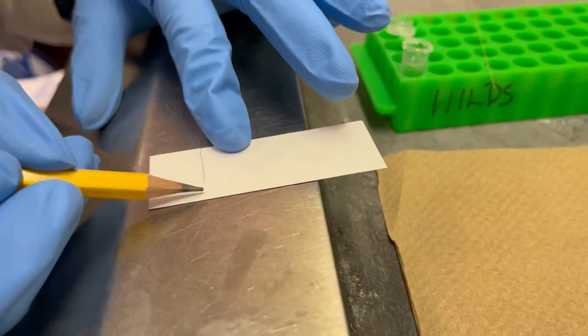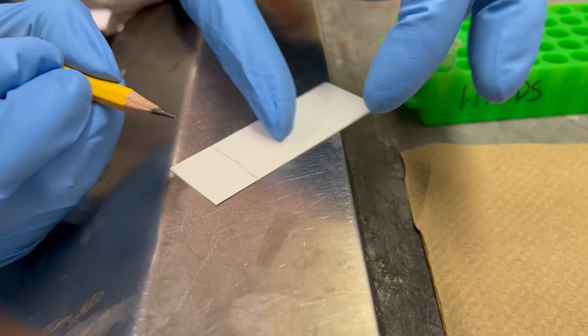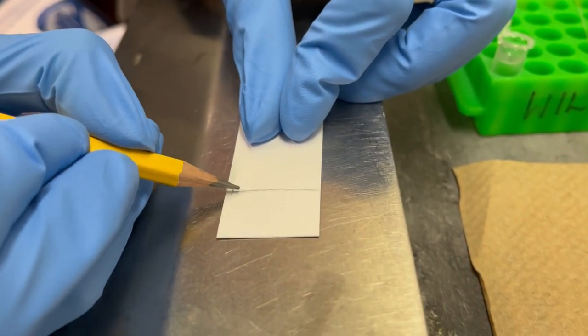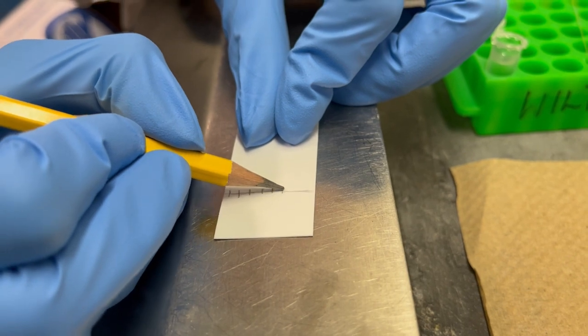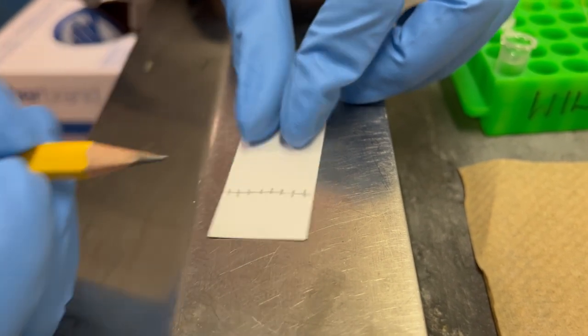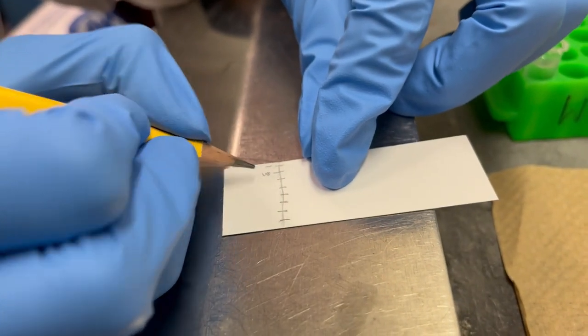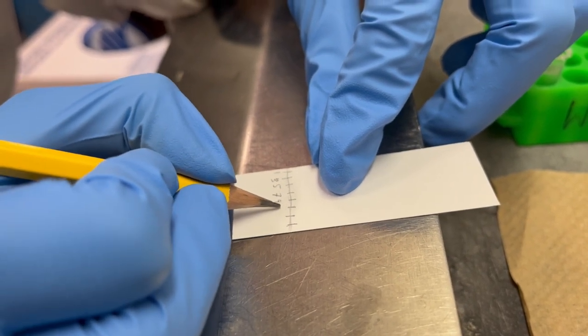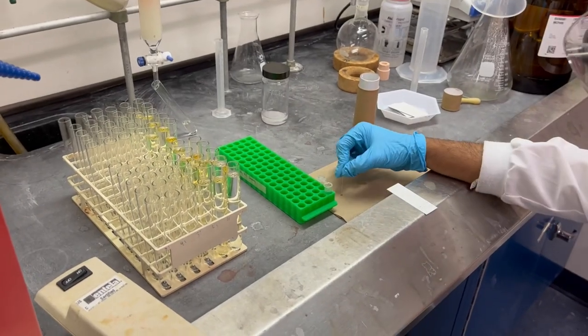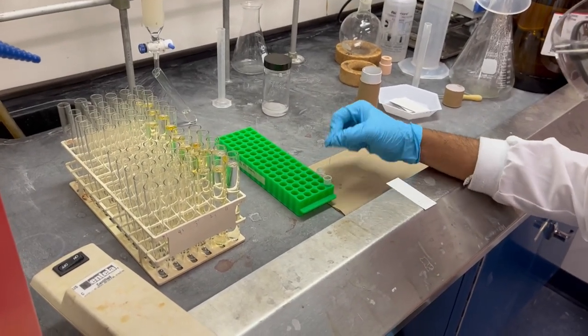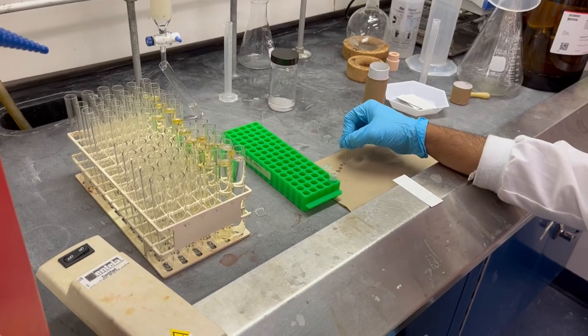Once a UV active spot is observed, silica plates are prepared with the fraction numbers using a pencil. For this column, every second fraction from the first active one were chosen. Fractions are then spotted on the line of the plate. The impure, crude mixture is also spotted along them as a reference point. The same glass spotter is reused but cleaned between each spotting with a solvent like dichloromethane.